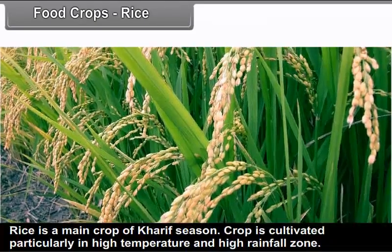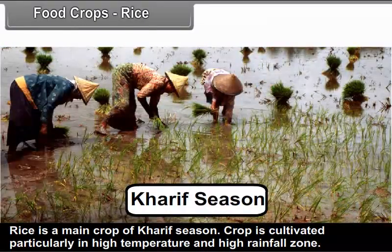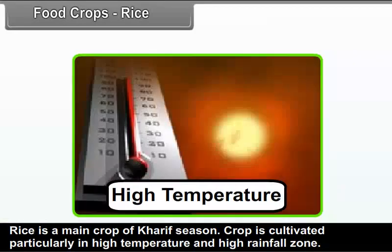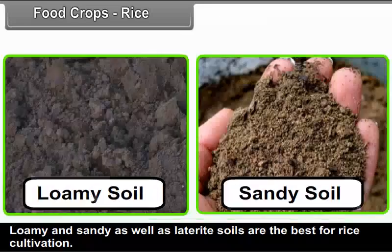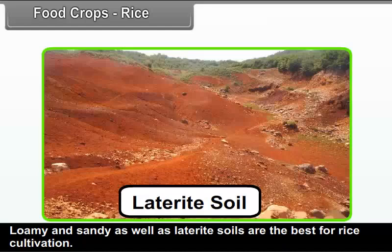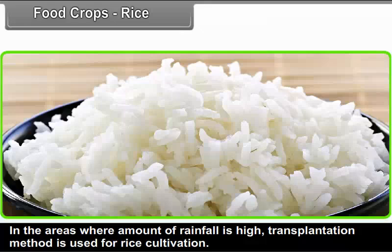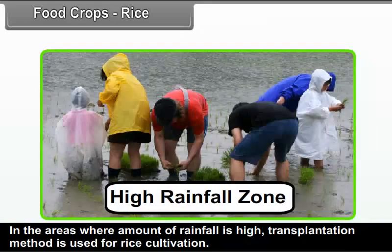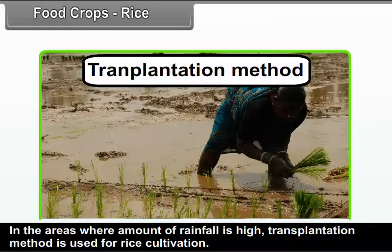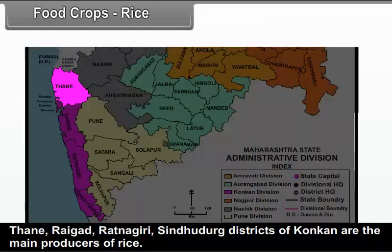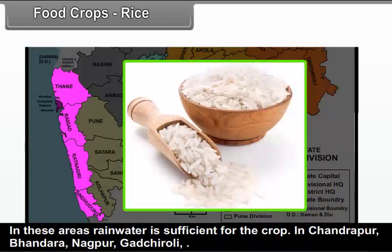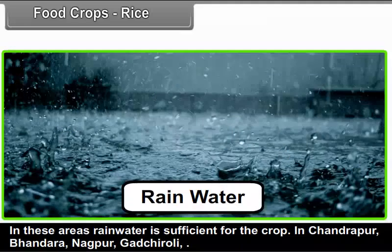Rice: Rice is a main crop of the Kharif season. The crop is cultivated particularly in high temperature and high rainfall zones. Loamy and sandy as well as laterite soils are best for rice cultivation. In areas with high rainfall, the transplantation method is used. Thane, Raigad, Ratnagiri, and Sindhudurg districts of Konkan are the main producers of rice, where rainwater is sufficient for the crop.